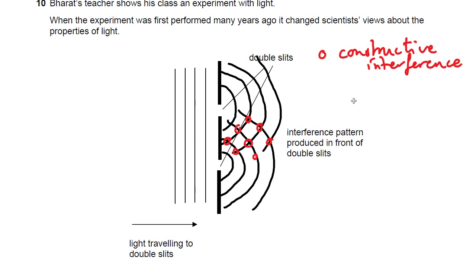In other words, at that point you've got two waves, both of which are peaking, so you get one peak which is much larger. Okay, it's like adding them up.